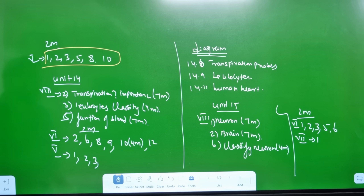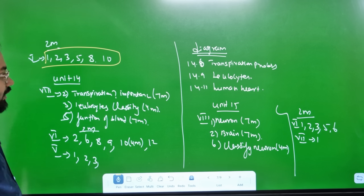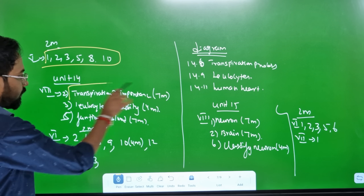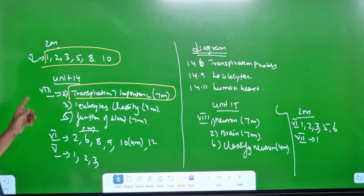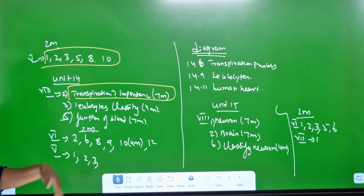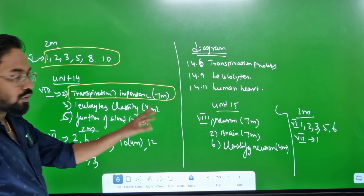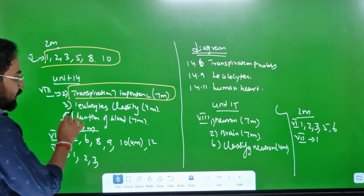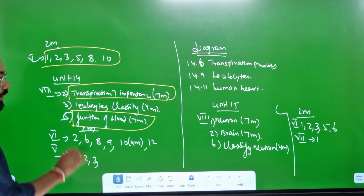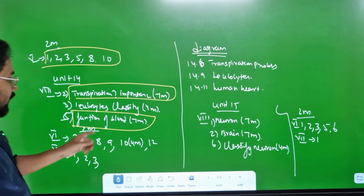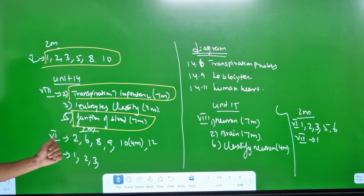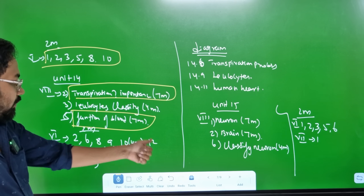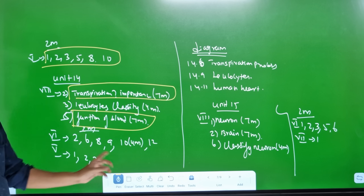Unit 14 is transpiration - 5 chapters, that is the most important thing. Definitely 7 marks. Roman number 8 is second question. Leucocytes classification is 4 marks. Functions of blood - definitely 7 marks. 2 marks are: 2, 6, 8, 9, 10, 18.